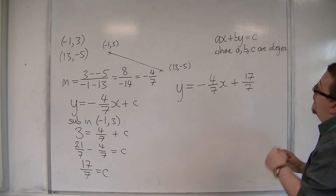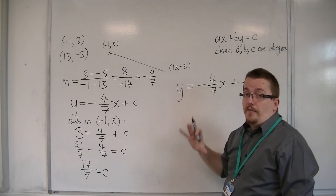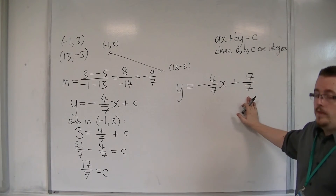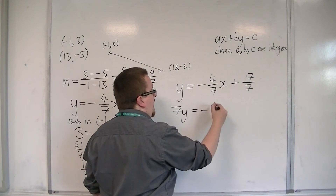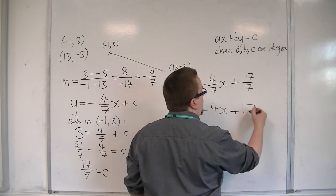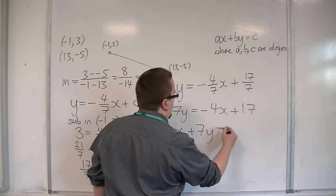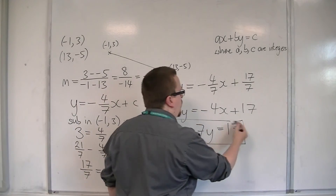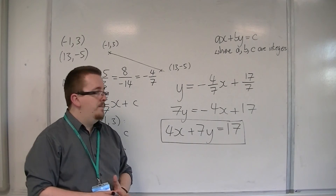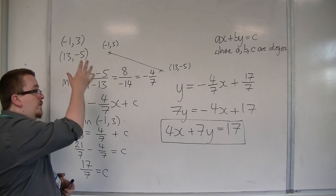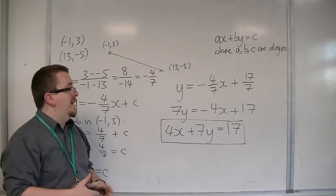Okay, so not very nice — it's not currently in the format that we want. So I'm going to multiply everything by 7 to get rid of these fractions, to get rid of the denominators. Multiplying through by 7, I get 7y, and minus 4x, and 17. I can then add 4x to both sides, and I now have it in the format that was required: ax plus by equals c, where a, b and c are integers — whole numbers. Go through the same process as in the previous video, then multiply through and rearrange to get it into the format that you want.